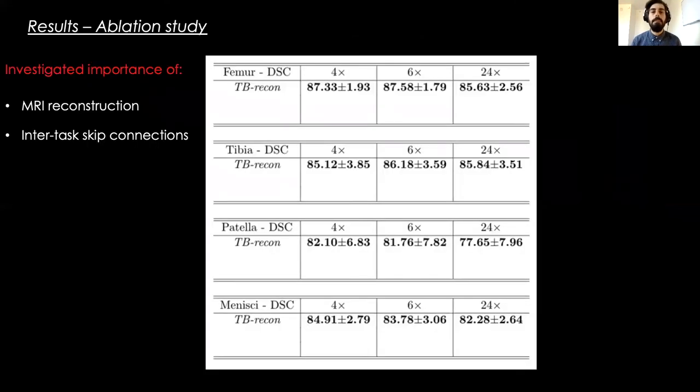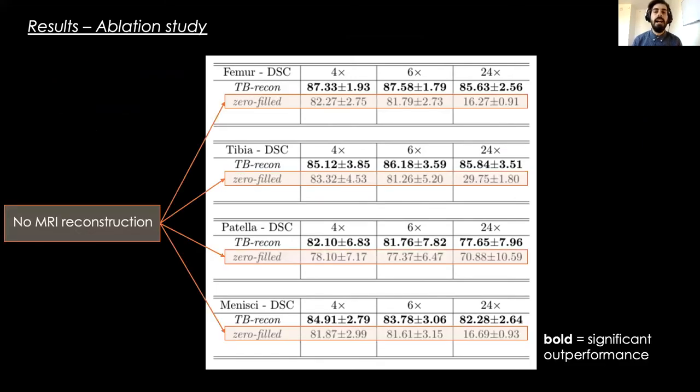We conducted an ablation study to demonstrate the importance of performing image reconstruction at intermediate tasks to the segmentation and prove the beneficial effect of inter-task skip connections. From the results, it can be observed that segmentation directly from undersampled data is unfeasible, especially at high acceleration factors.